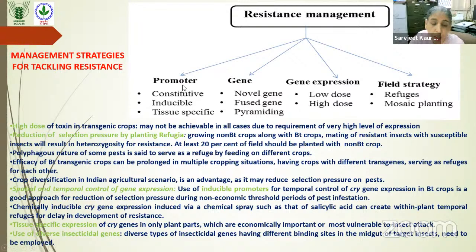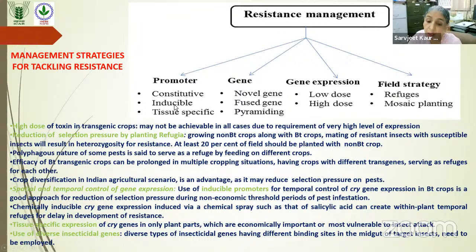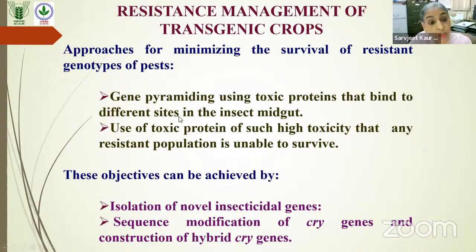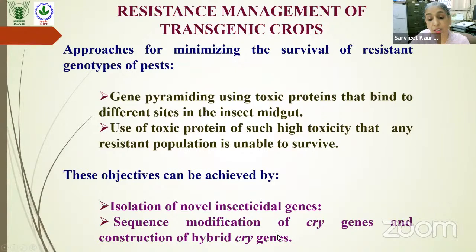Gene pyramiding means using toxic proteins that bind to different sites in the insect, so the insect must evolve resistance to both simultaneously. Or using such high toxicity that the resistant population cannot survive. For this, we need novel insecticidal genes, sequence modification, and chimeric protein construction. We can construct novel genes by site-directed mutagenesis or by domain swapping — for example, taking Domain 1 from one cry protein type and studying effects on protein stability and insecticidal activity. This requires thorough knowledge of receptors and mechanism of action.